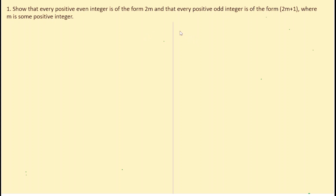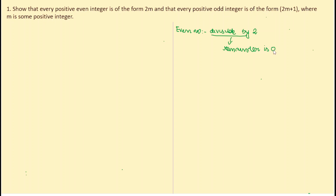What is an even number? Any number that is divisible by 2 is called an even number — divisible by 2 means the remainder is 0. Examples of even numbers are 2, 4, 6, 8, 10, 12. Odd numbers are just the opposite: any number that is not divisible by 2 is called an odd number, meaning the remainder is not 0.